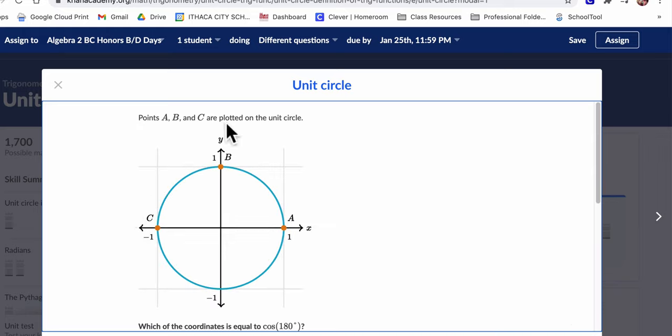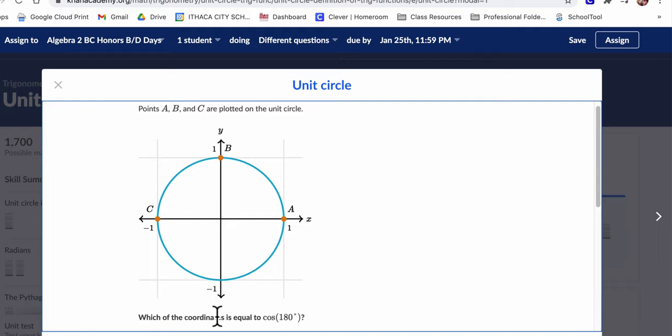Points a, b, and c are plotted on the unit circle. Okay? Which of the coordinates is equal to the cosine of 180? Well, here's 180 degrees. And c, that point right there, has an x value of the cosine of 180. The x value of any point on the unit circle is the cosine of the angle that has a terminal side that crosses that point.